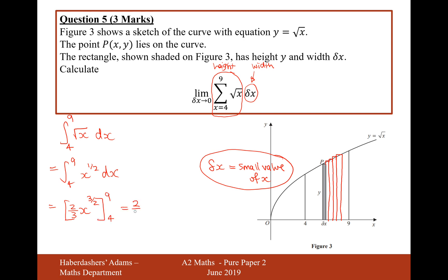Let's now substitute that in. 2 over 3, 9 to the power of 3 over 2, minus 2 over 3, 4 to the power of 3 over 2.